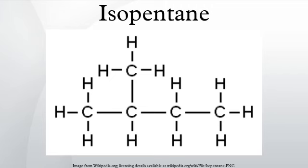An isopentyl group is a subset of the generic pentyl group. It has the chemical structure CH2CH2CH(CH3)2. Isopentane is one of three structural isomers with the molecular formula C5H12, the others being pentane and neopentane.